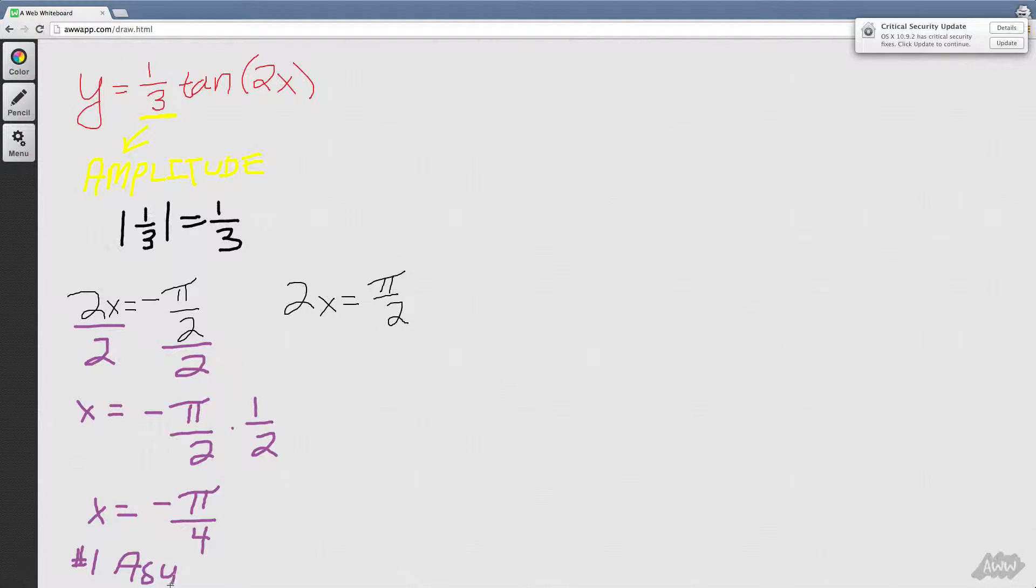Alright now this one, same thing you divide by 2 to isolate the x, x equals pi over 2, multiply by the reciprocal and then you'll get pi times 1 that's pi, 2 times 2 that's 4. So now we have our two asymptotes.